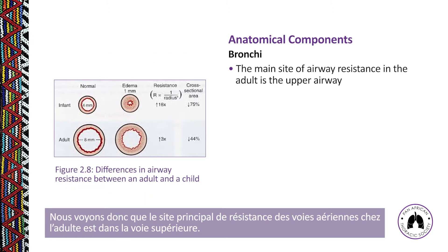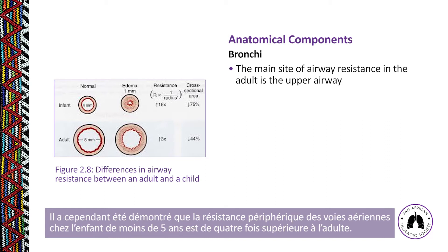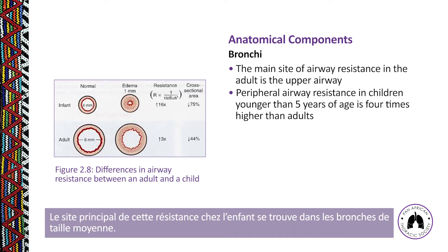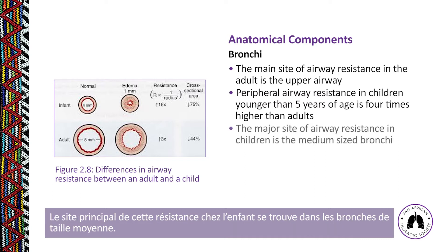The main site of airway resistance in the adult is in the upper airway. However, peripheral airway resistance in children younger than five years of age is four times higher than in adults. The major site of airway resistance in children is in the medium-sized bronchi.